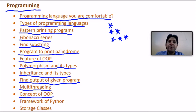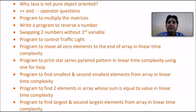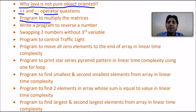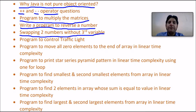Questions on object-oriented programming concepts cover classes, objects, and their real-life examples. They may ask about Python frameworks and storage classes, and why Java is not a pure object-oriented language unlike .NET. Other questions include the increment and decrement operators, matrix multiplication programs, reversing a number, swapping two numbers without a third variable, and a program to simulate a traffic light. These are easy questions that technical companies typically ask.